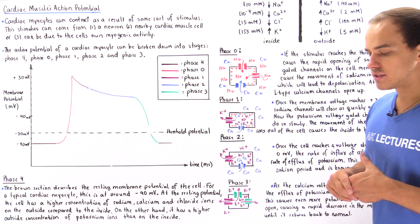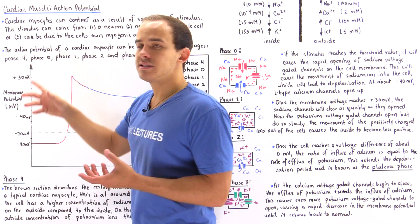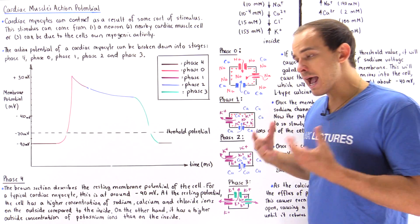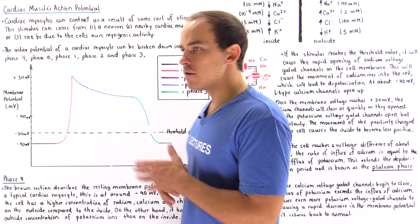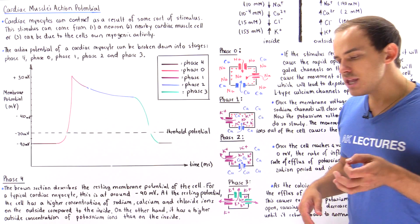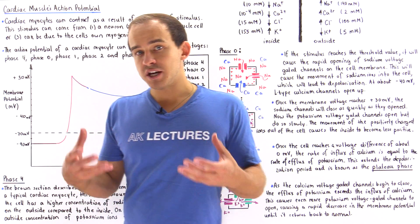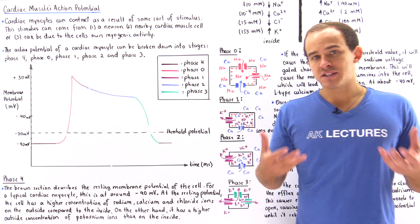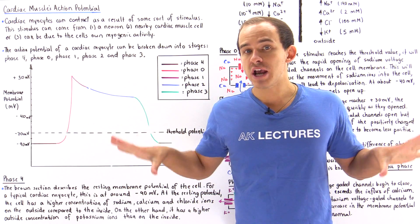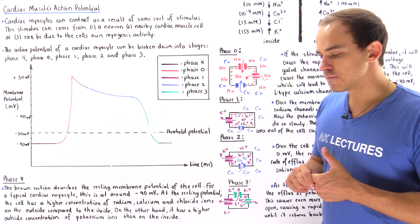Cardiac muscle cells are also known as cardiac myocytes, where the word myocyte simply means a muscle cell. Cardiac myocytes can generate an action potential as a result of three things: they can be stimulated by a neuron, they can be stimulated by a nearby muscle cell, or if a nearby muscle cell generates an action potential, that action potential can propagate to adjacent muscle cells via gap junctions.